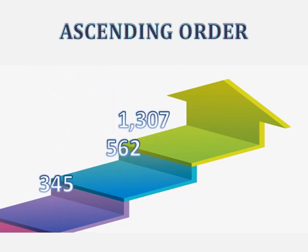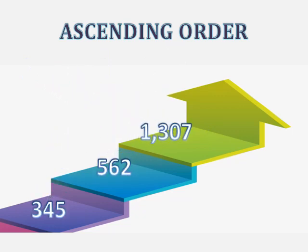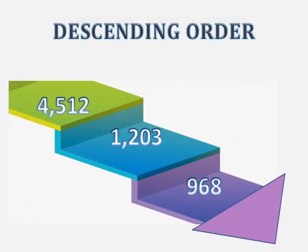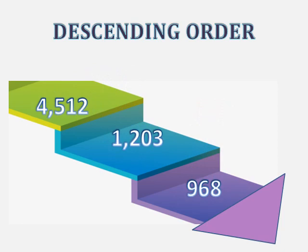These numbers arrange themselves in ascending order starting from the smallest: 345 at the first step, 562 at the second step, and 1307 at the top. In descending order, they arrange from biggest to smallest: 4512 at the top, 1203 at the second step, and 968 at the last.